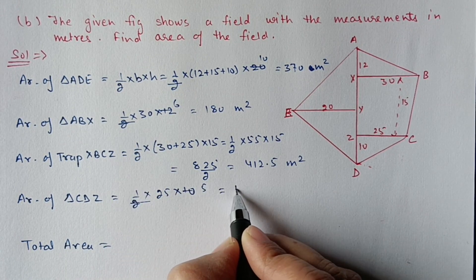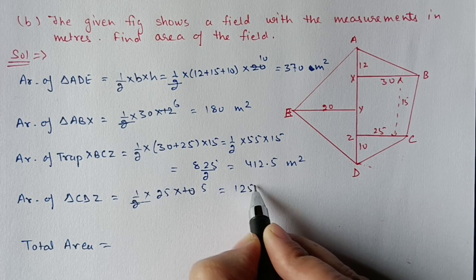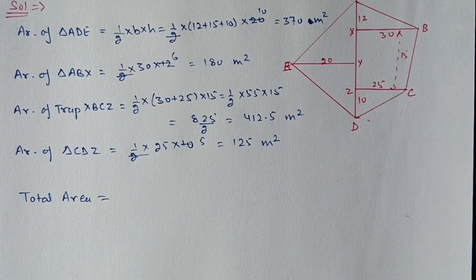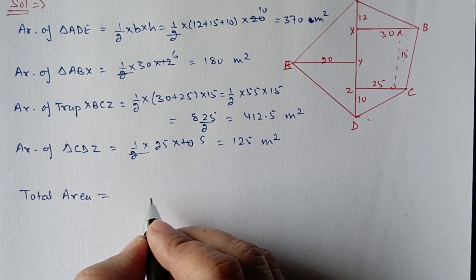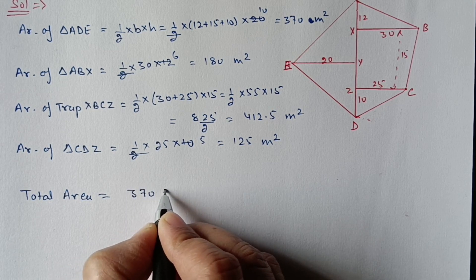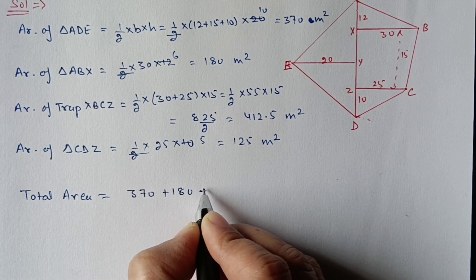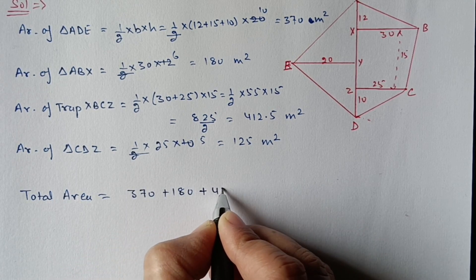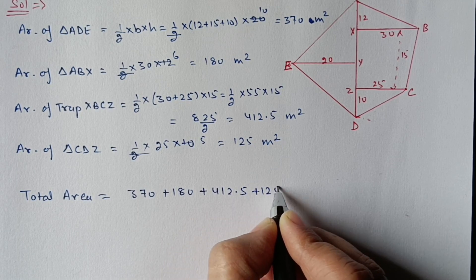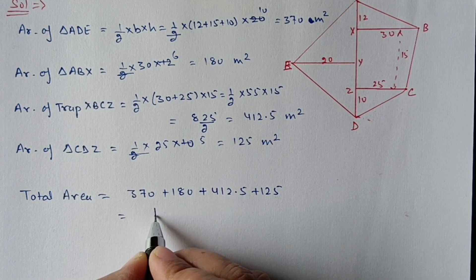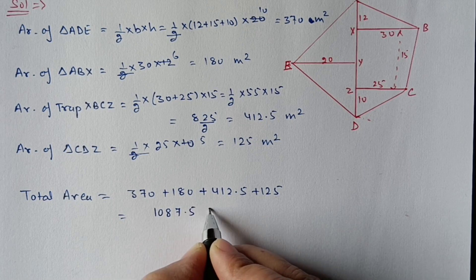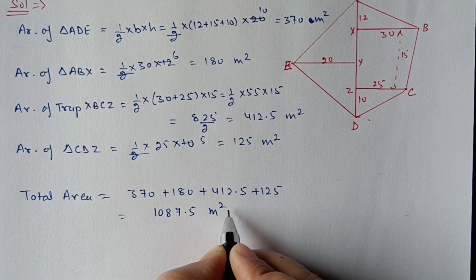For the last triangle: half × base × height. Base is 25 and height is 10, giving 125 m². Total area = 370 + 180 + 412.5 + 125 = 1087.5 m².